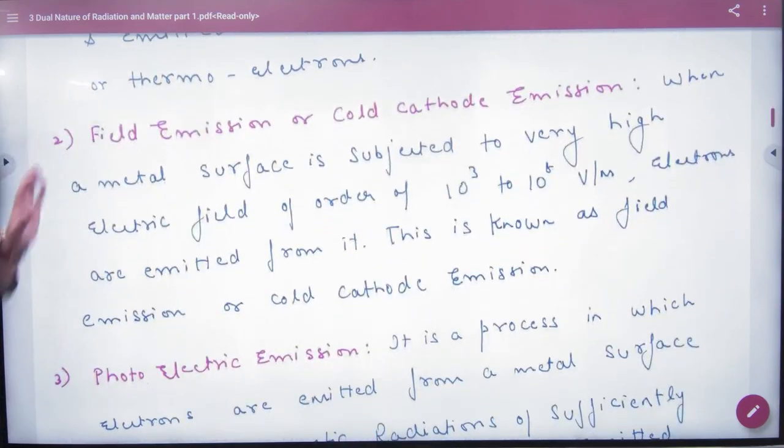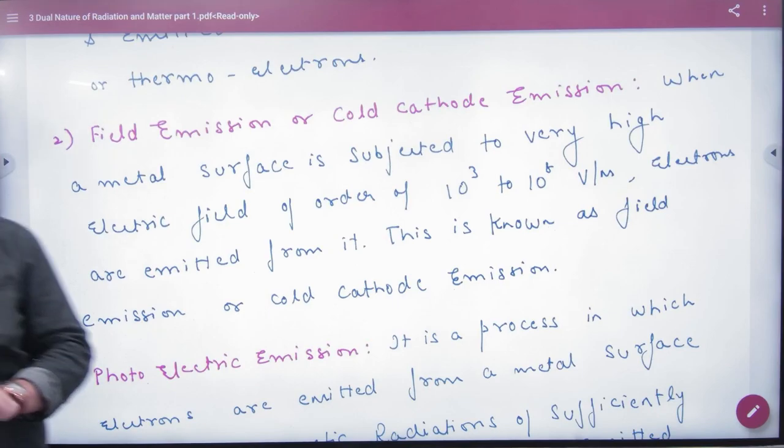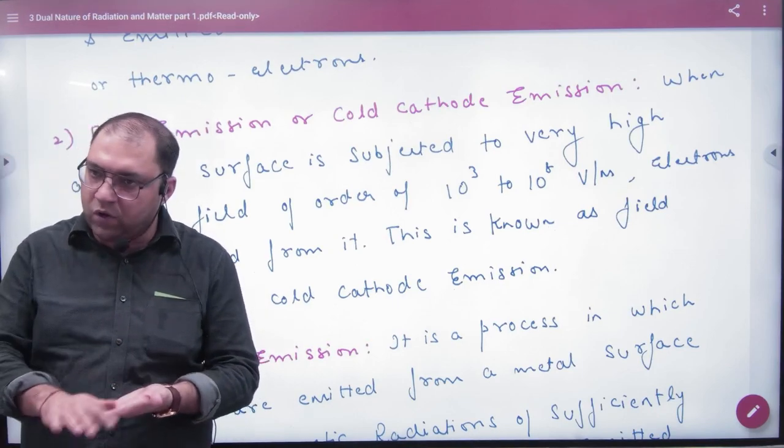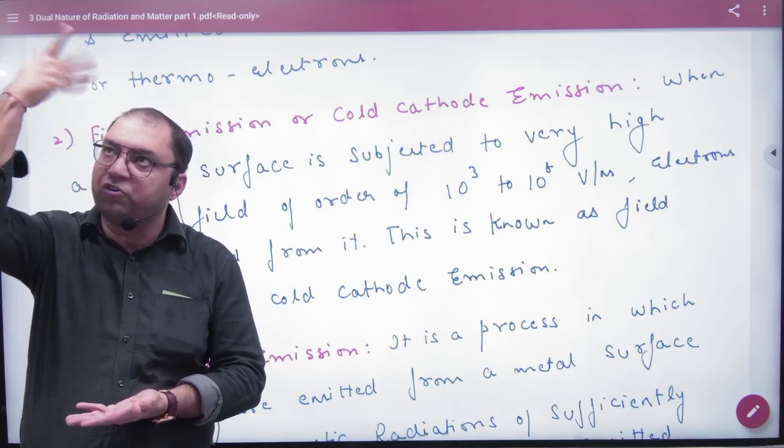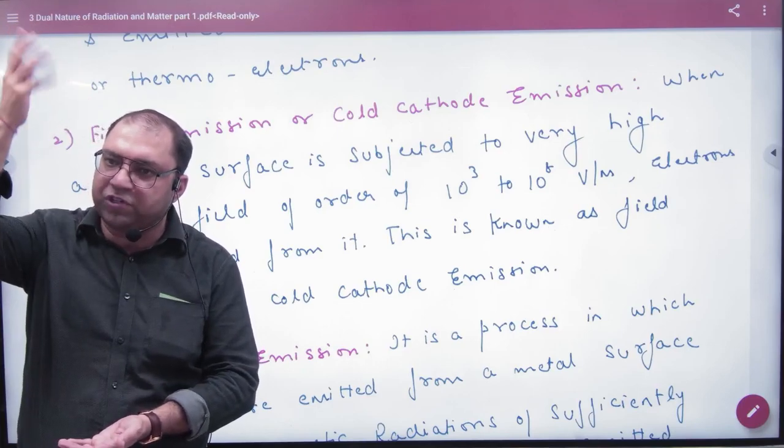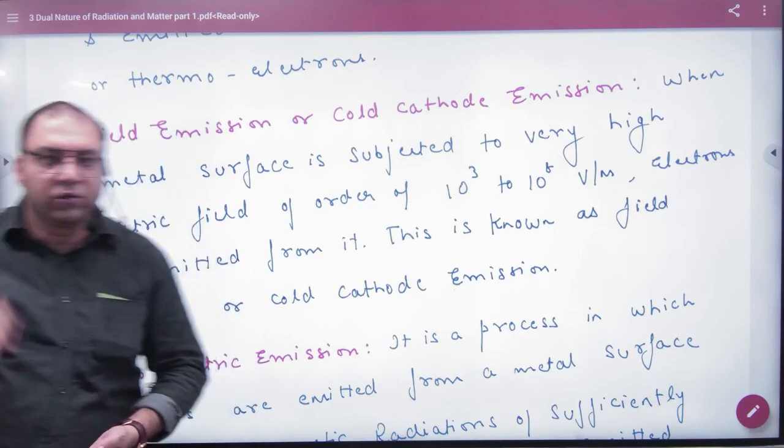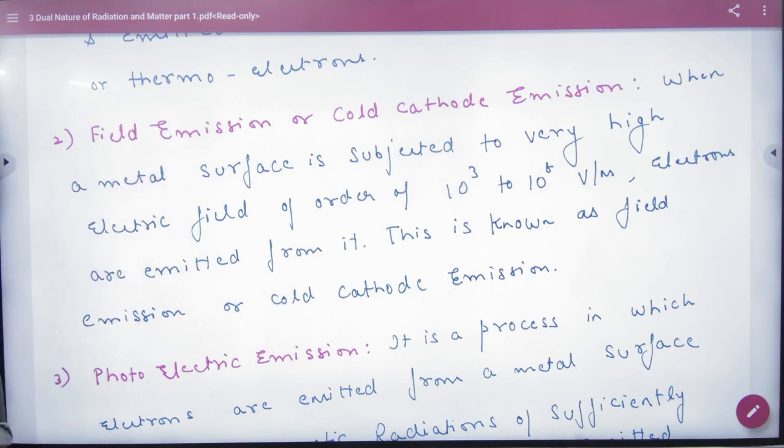Next is field emission or cold cathode emission. It says that in the metal surface, photosensitive free electrons, you put electric field outside. If you put the positive charge, from the electric field, the electron is emitted. This is known as field emission or cold cathode emission.